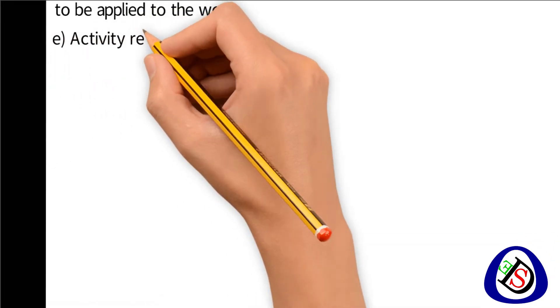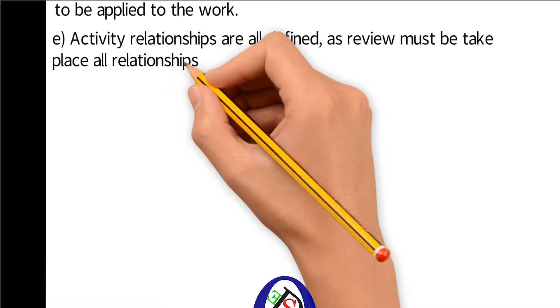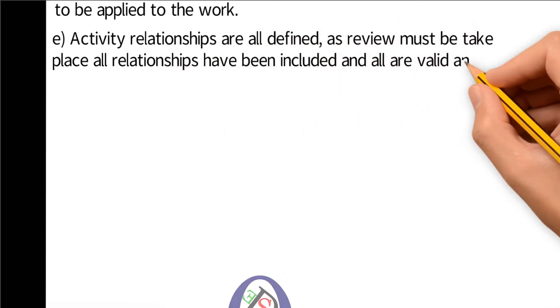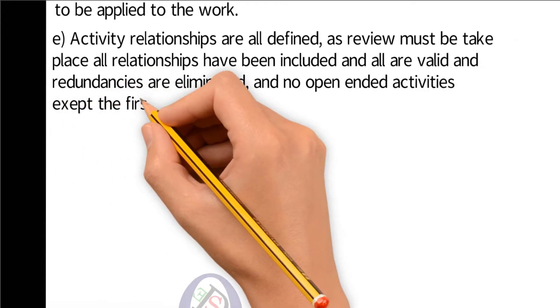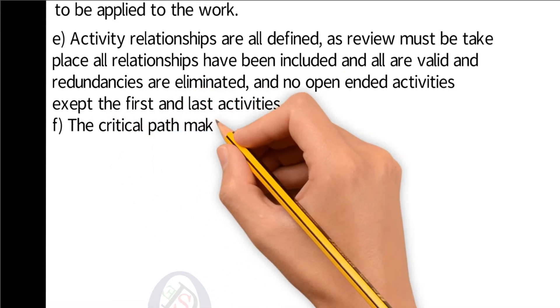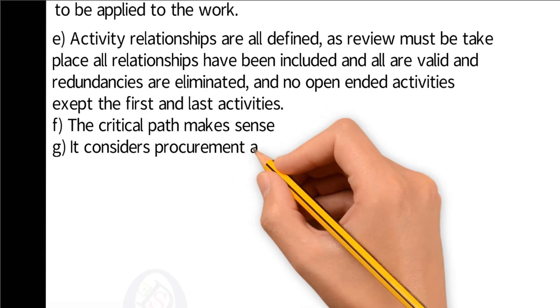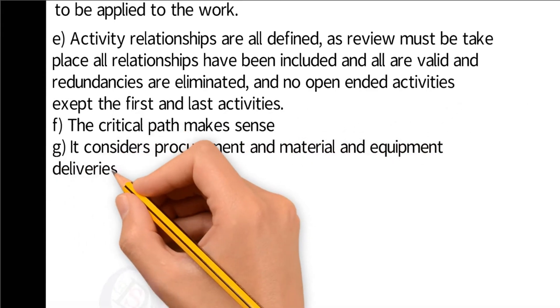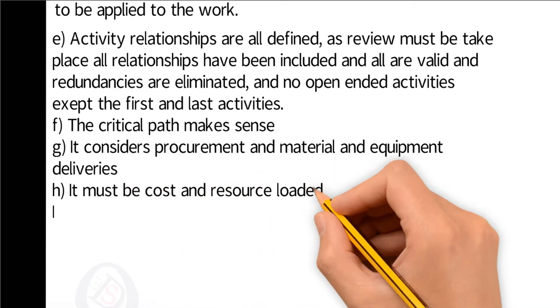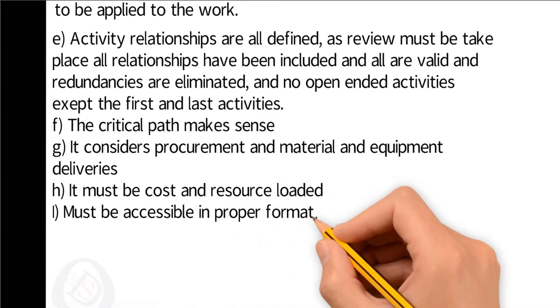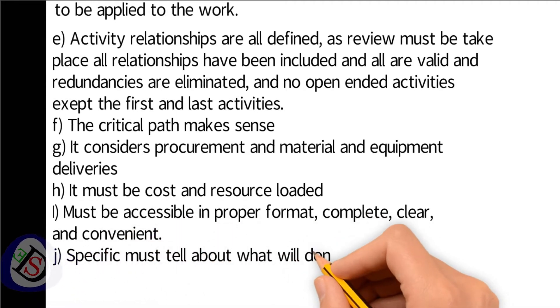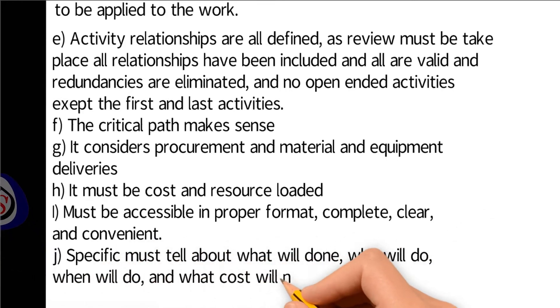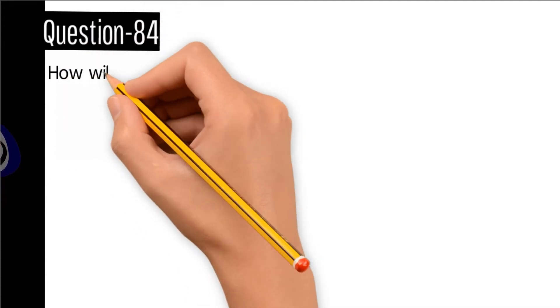E) Activity relationships are all defined — a review must take place, all relationships have been included, all are valid, redundancies are eliminated, and no open-end activities except the first and the last. F) The critical path makes sense. G) It considers procurement and material and equipment deliveries. H) It must be cost and resource loaded. I) Must be accessible in proper format — complete, clear, and convenient. J) It must tell: what will be done, who will do it, when it will be done, and what cost will be needed.